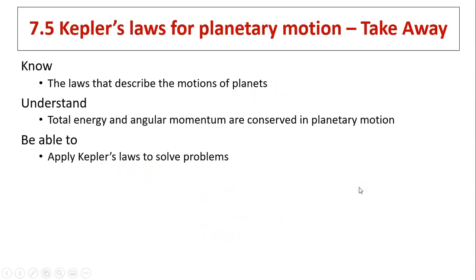So what's the takeaway? In this lesson, we learned three laws that describe the motion of planets. Kepler's first law says the path has to be elliptical. The second law says the line from the sun to the planet sweeps out equal area in the same time. The third law tells us the relationship between period and the length of the semi-major axis. We need to understand the total energy and angular momentum of planetary motions are constant. They are conserved. That is because gravity is a conservative force and there's no torque. We apply Kepler's laws to solve problems.